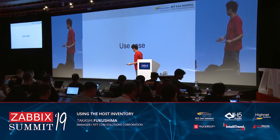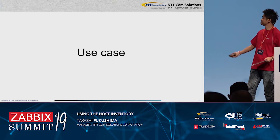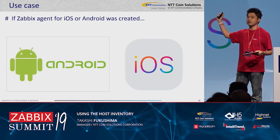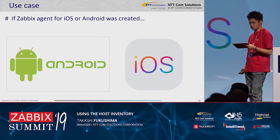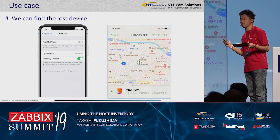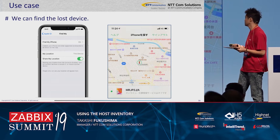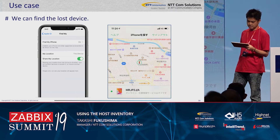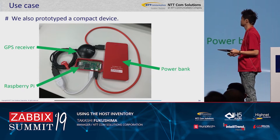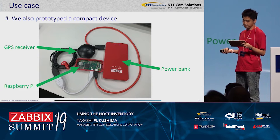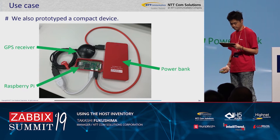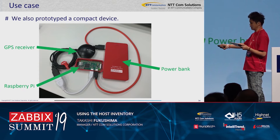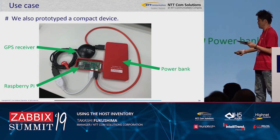Use case: if a Zabbix agent for iOS or Android was created, we could find a lost device — like the Find My iPhone feature. Next use case: we also prototyped a compact device. This device combines Raspberry Pi, GPS receiver, and a power bank.